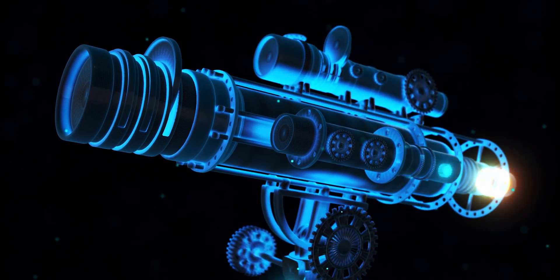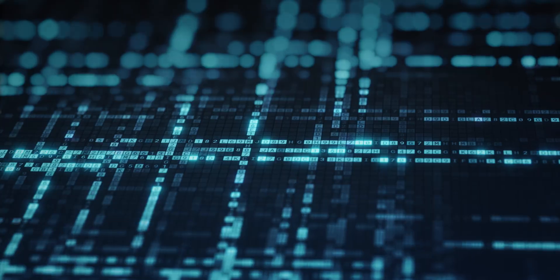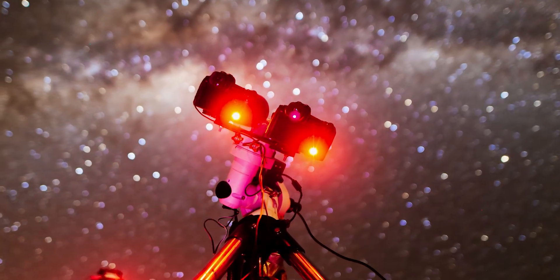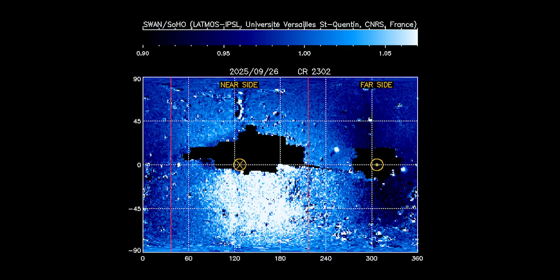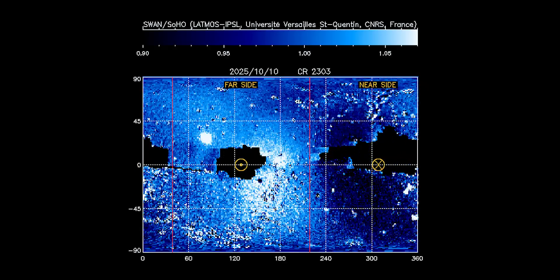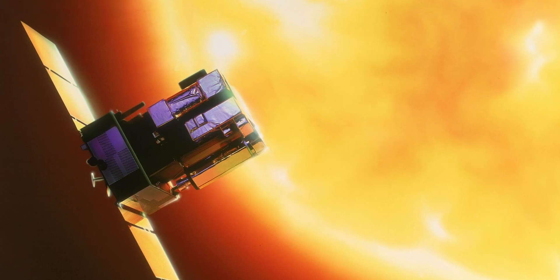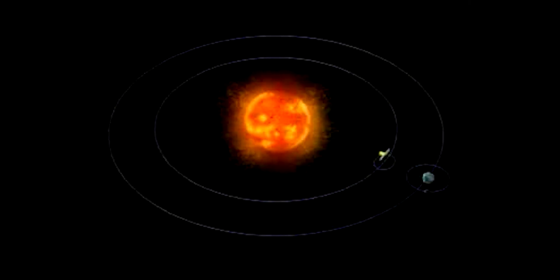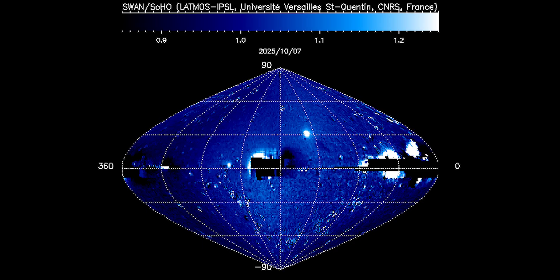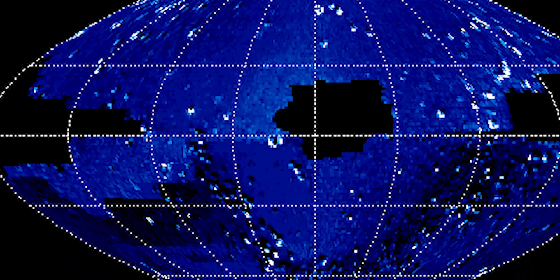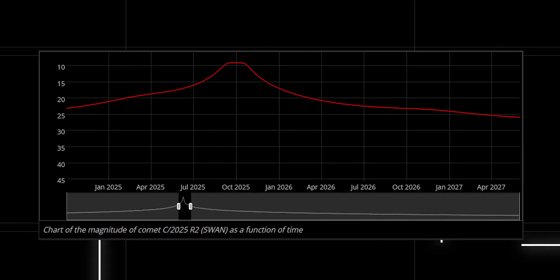The discovery didn't come from a mountaintop observatory or a next-generation telescope. It began quietly, in a stream of data nearly three decades old. On September 11, 2025, solar physicist Vladimir Bezugli was reviewing ultraviolet readings from the Soho spacecraft, a satellite launched in 1995 to monitor the Sun's behavior. Among the shifting clouds of hydrogen and plasma, something unexpected appeared. A faint oval, glowing just beyond the solar limb. It wasn't a flare, or an instrument echo. It was moving, expanding, and growing brighter with each hourly frame.